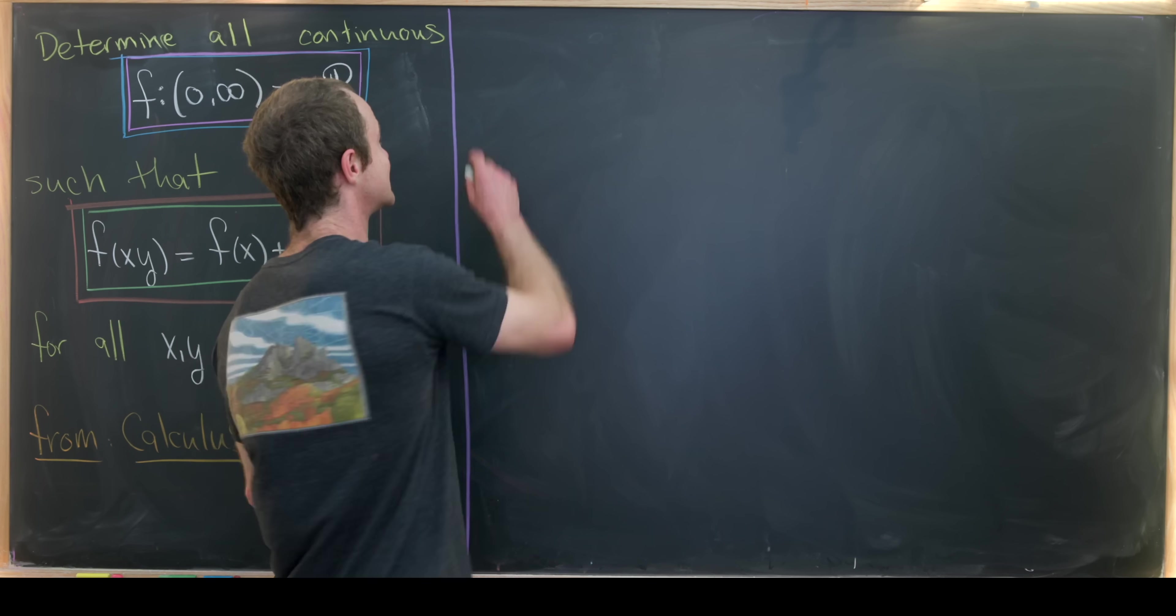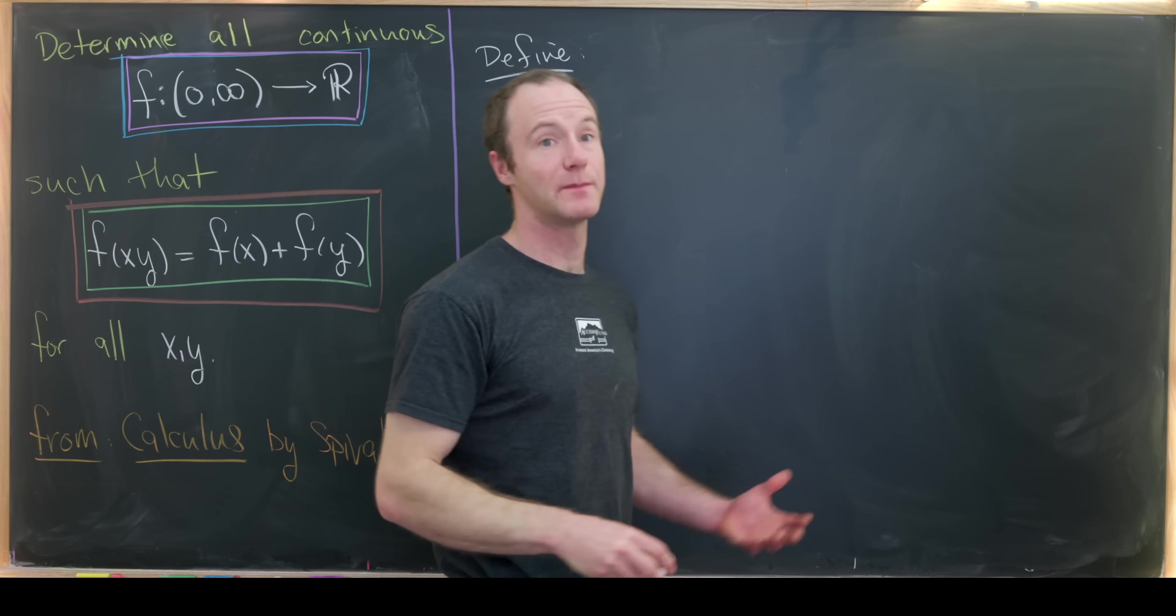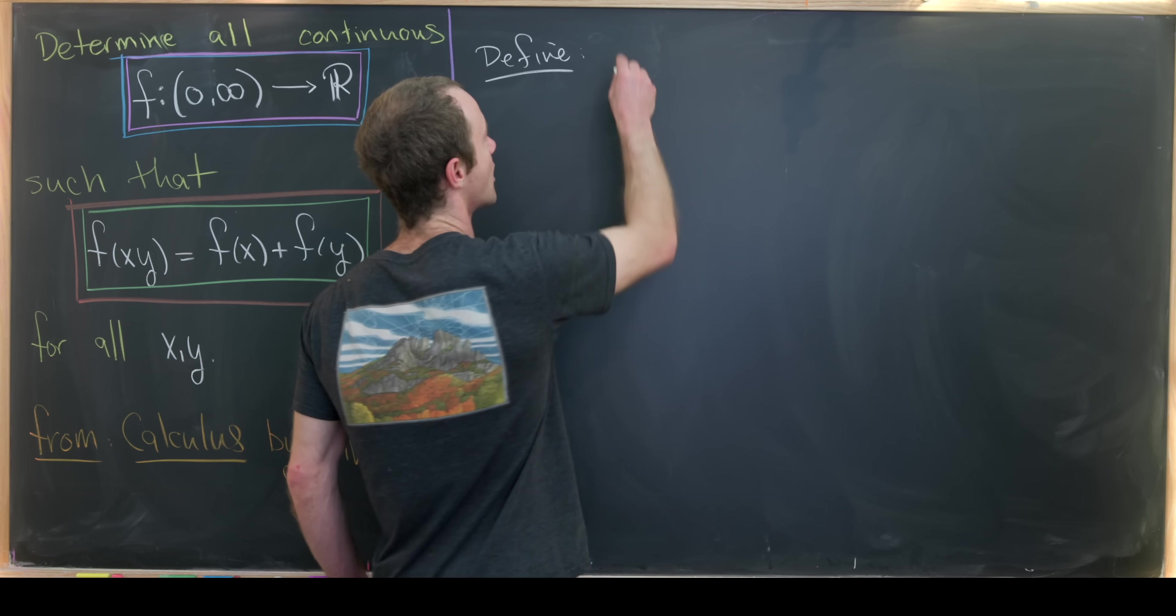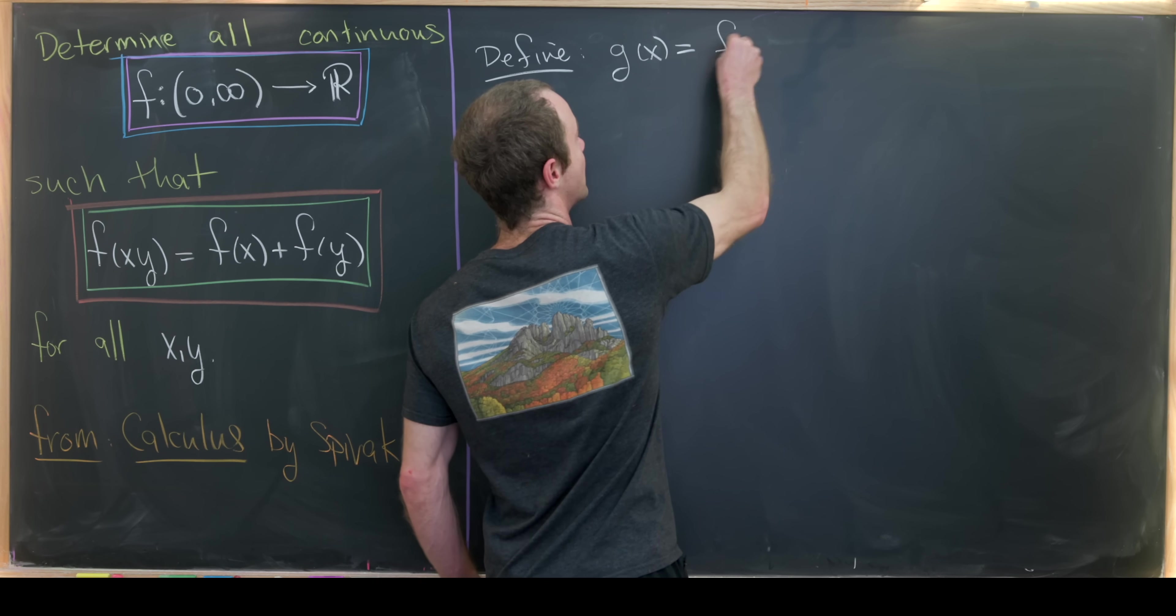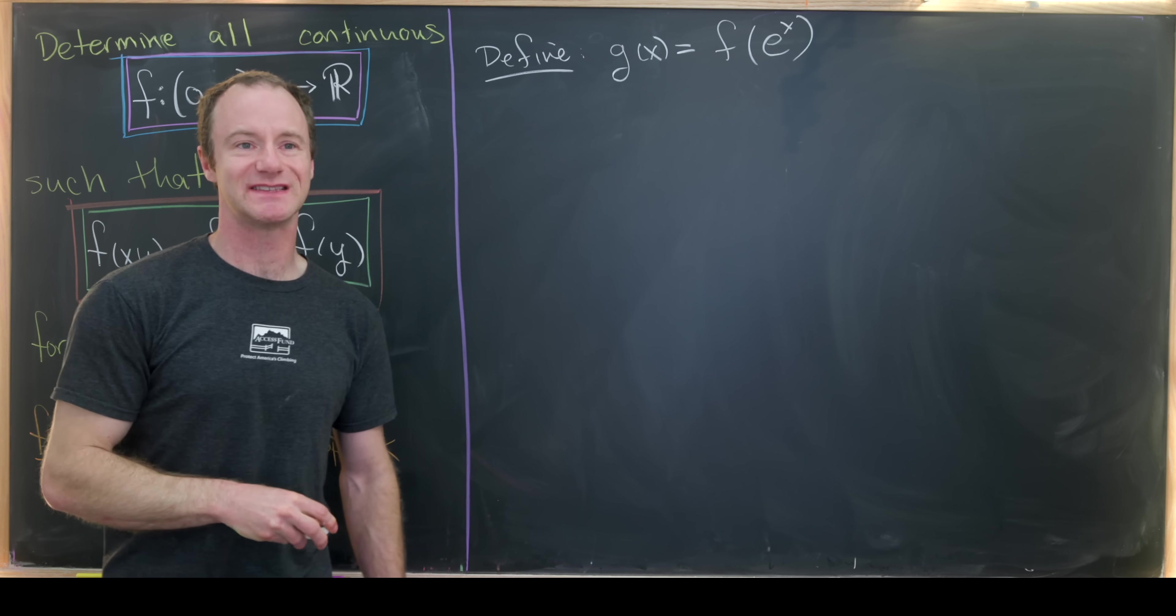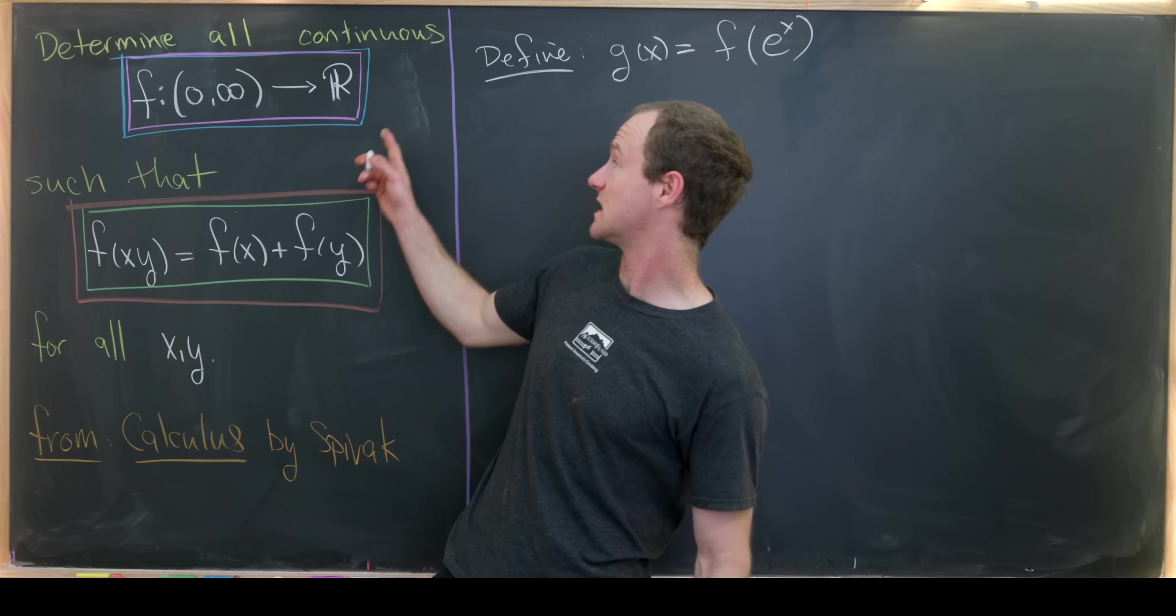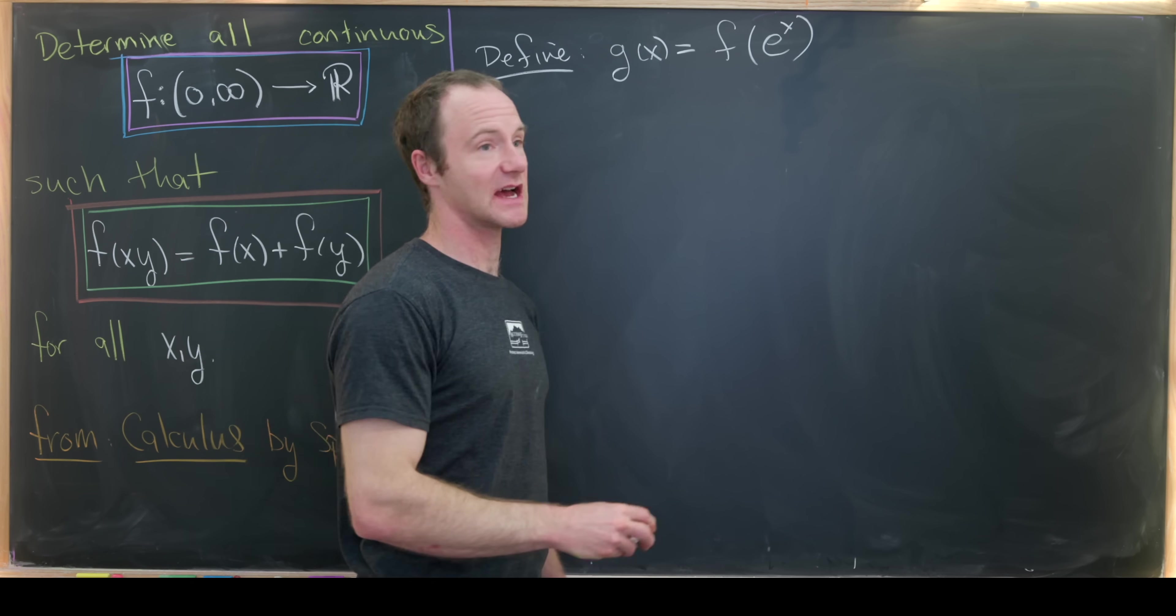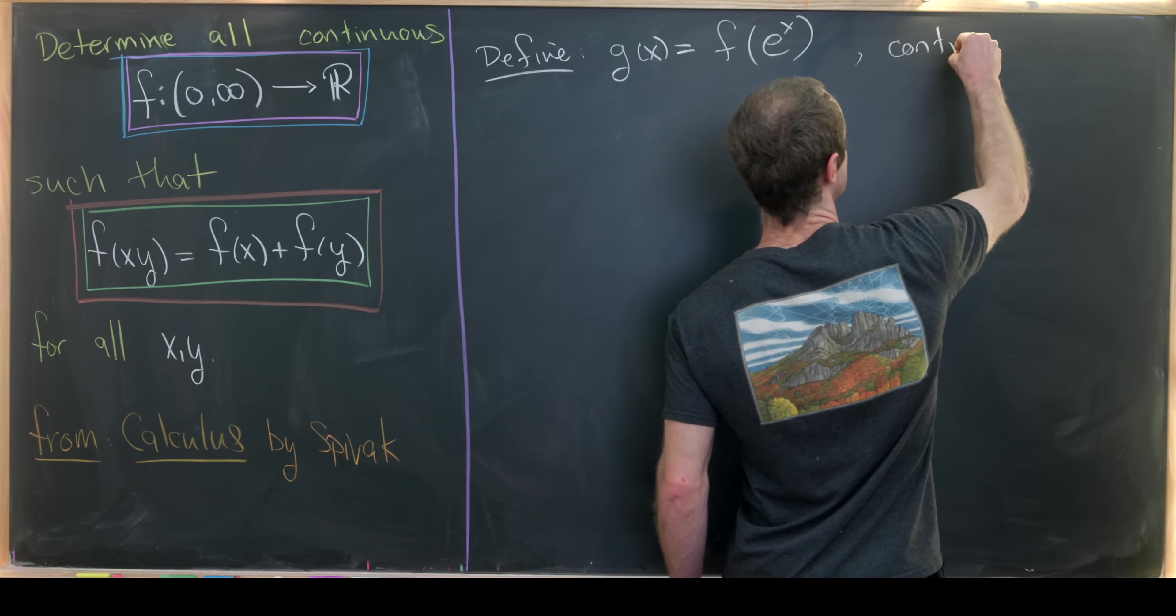Let's define the following function which will be some sort of compositional transformation of our function f. We'll call it g(x). And g(x) will be f(x) composed with the exponential function. So in other words it's f(e^x). And since f is continuous and e^x is continuous, then we know g(x) is also continuous.